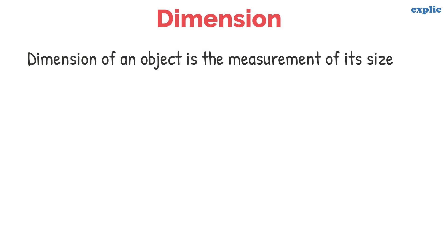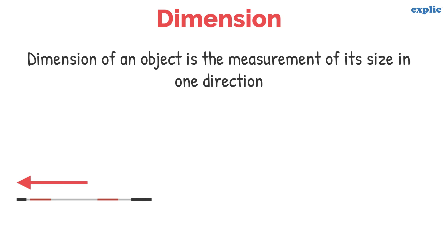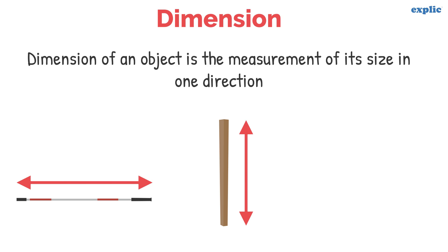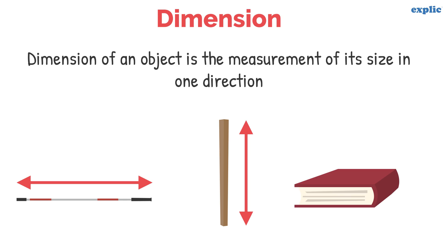The dimension of an object is the measurement of its size in one direction. For example, the length of the stick, the height of a pole, and the breadth of a book.